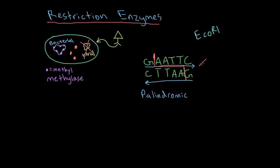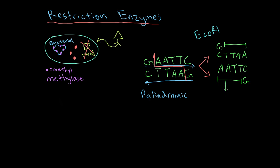After cleavage, the result is two separate strands. One strand has a G on top with T-T-A-A hanging below, and the other has A-A-T-T-C on top with a G at the bottom. The overhanging single-stranded ends are known as sticky ends. These sticky ends float around, and because they are complementary strands, they can re-anneal with each other.